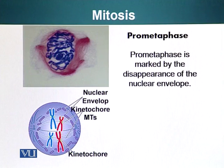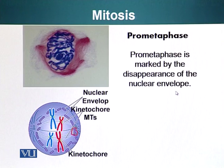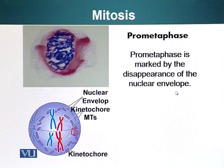The next stage is pro-metaphase, marked by the disappearance of the nuclear envelope. As depicted in this figure, the nuclear envelope starts to break down and completely disintegrates. The kinetochores — the regions of chromosomes where microtubules attach — start to form, and the spindle microtubules, these kinetochore microtubules, start to attach to the kinetochore, resulting in movement of the poles and the chromosomes inside the cell.